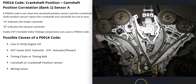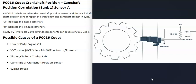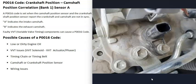An engine needs to be timed correctly and has different timing components that keep it timed — a timing chain or timing belt. Many engines nowadays have variable valve timing, which can adjust timing at different RPMs. There are also camshaft position sensors and crankshaft position sensors that report the location of the camshaft and crankshaft back to the computer as they're spinning.